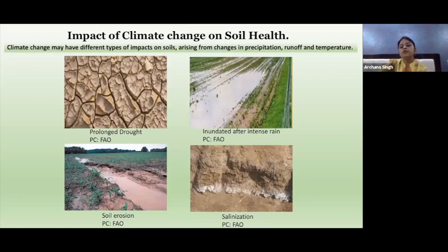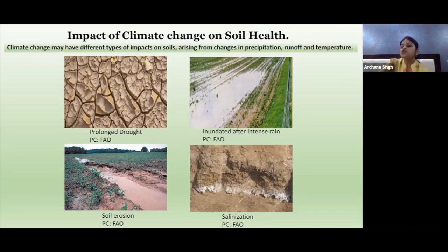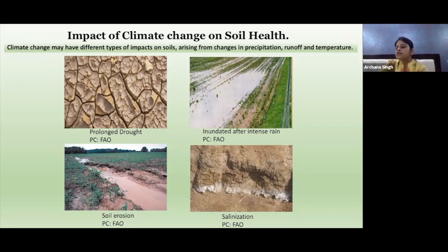Another factor related to agriculture production is soil health. A healthy soil is key to agriculture production. Climate change is expected to affect soil health by decreasing soil moisture from less precipitation and changes in evapotranspiration, increasing soil erosion due to strong winds, storms, and landslides, increasing soil salinization in coastal areas due to rising sea level, increasing inundation and waterlogging from excessive precipitation, and changing soil carbon storage and nutrient retention capacity due to temperature and precipitation changes.